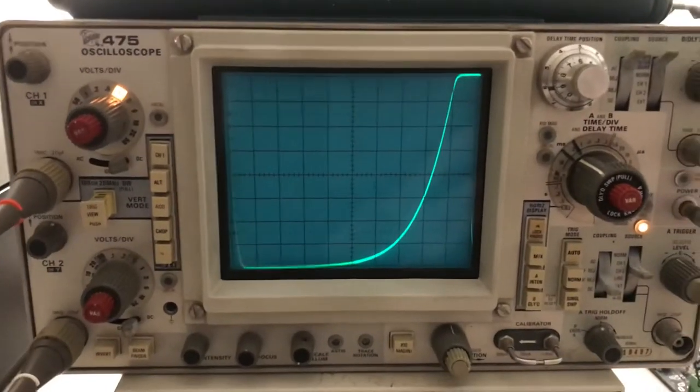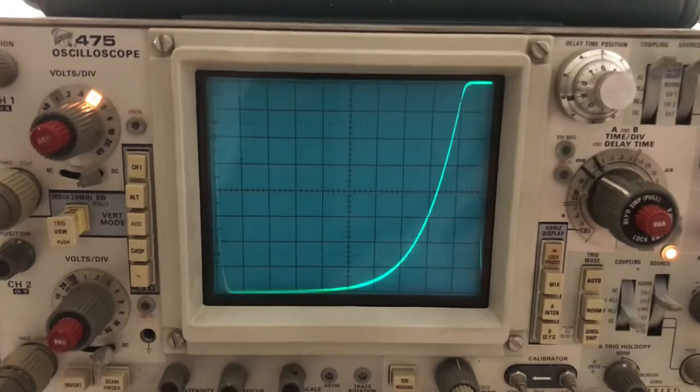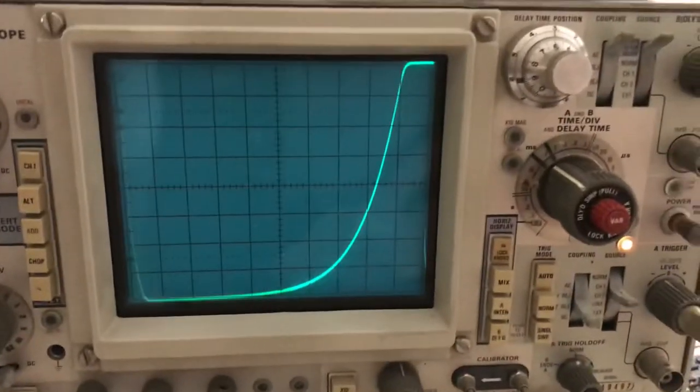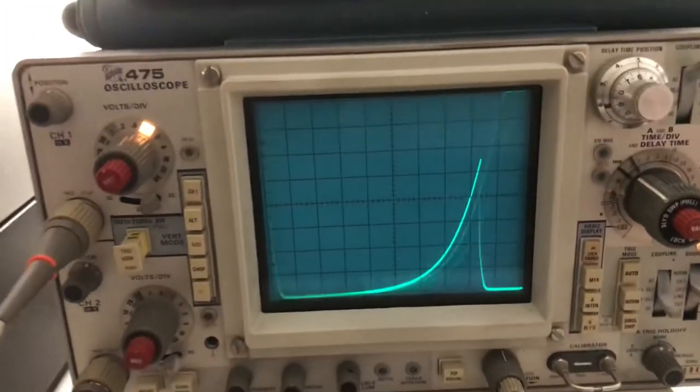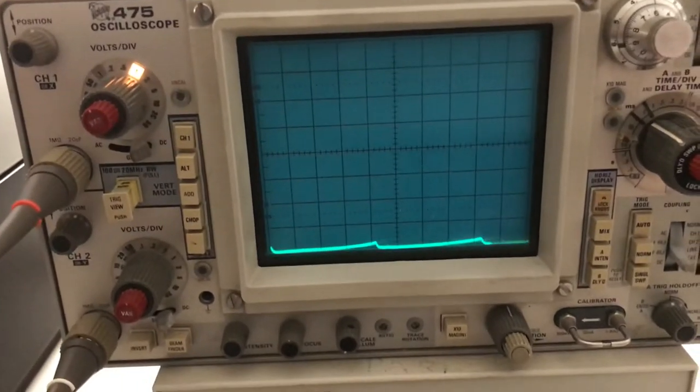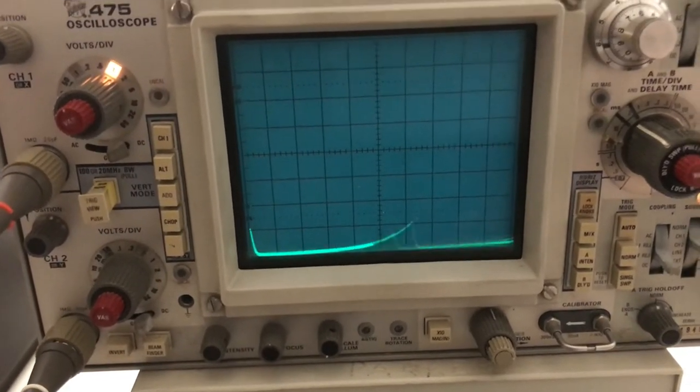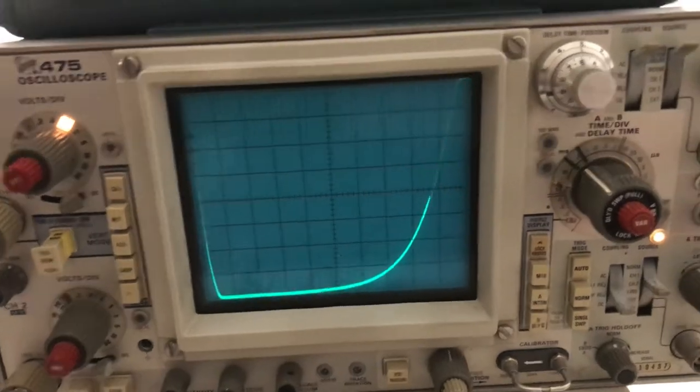So you can see this chart on the oscilloscope here is indeed the graph of e to the X, or pretty close to it. And you can see I can scale it down as well.